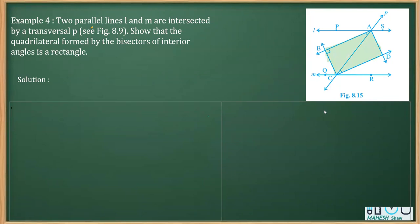To prove this figure is a rectangle, we are actually going to prove it is a parallelogram first, and then prove one angle is 90 degrees. A parallelogram whose one angle is 90 degrees is a rectangle. To prove it is a parallelogram, we are going to use the concept of alternate interior angles.